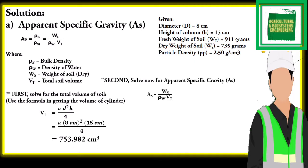Second, we can now solve for the value of the apparent specific gravity. We will use this formula, substituting the values we have. The value for the apparent specific gravity is 0.975.